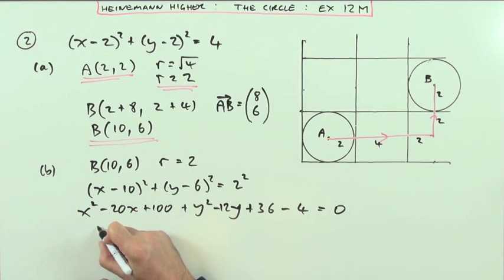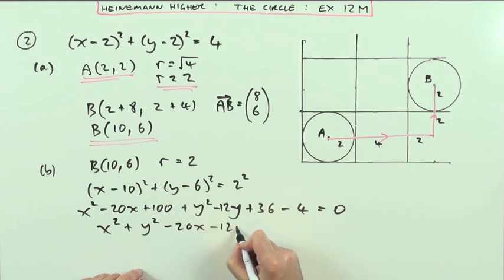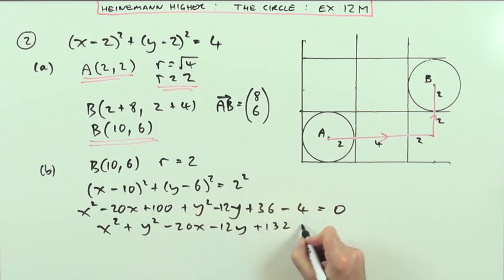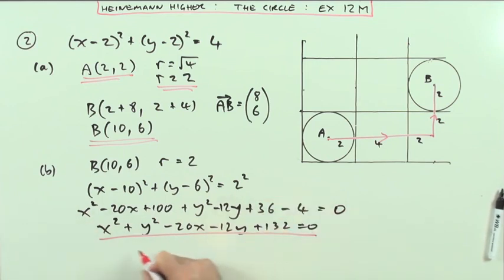Putting into the standard form of the squared terms first: x² + y² - 20x - 12y, and then I've got 36 take away four is 32, plus 132 equals zero. Doesn't take long to get from one form to the other in that direction of multiplying it out. There, that's question two.